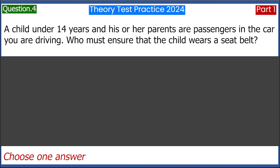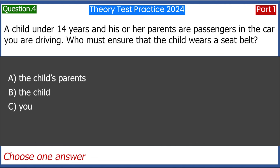A child under 14 years and his or her parents are passengers in the car you are driving. Who must ensure that the child wears a seat belt? A. The child's parents. B. The child. C. You. D. The front seat passenger. Answer: C. You.